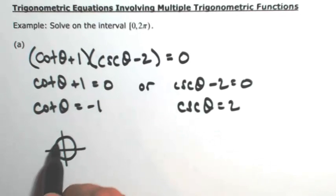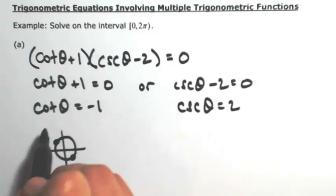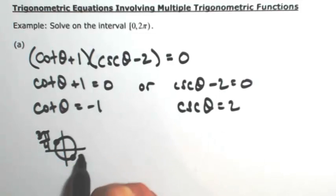So cotangent is negative in the second and the fourth quadrants. So that's where x and y are going to be completely opposite, which are at 3π over 4 and 7π over 4.